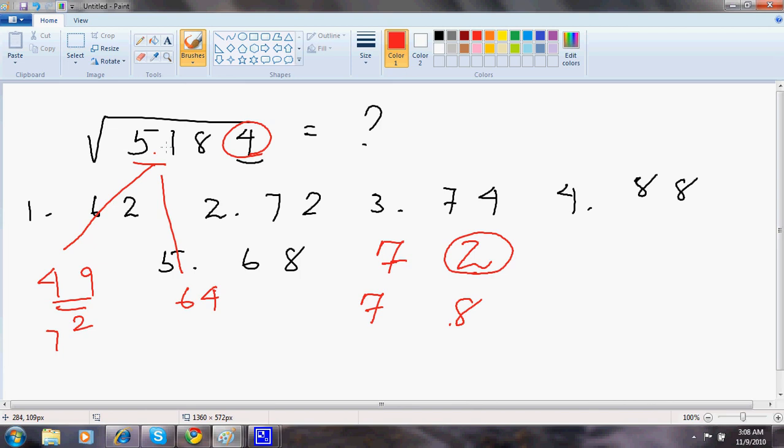Now check, 51 is closer to which one? 49 or 64? It is closer to 49. Which is the smaller number between 49 and 64? So between 2 and 8, the smaller number is 2. As it is closer to the smaller number, the answer will be the smaller number. This is 72.